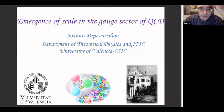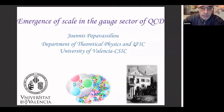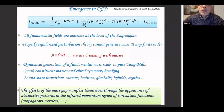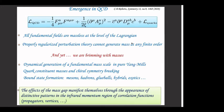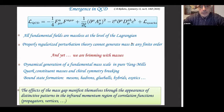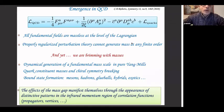I would like to talk today about emergence of scale in the gauge sector of QCD, or at least the way we understand it right now. I want to start with the notion of emergence, which is relatively new and has been put forth by Greg Roberts in a series of papers and many workshops. It is the observation that out of a set of seemingly simple rules you get an enormous complexity, and you can try to interpret the resulting complexity out of these basic rules.